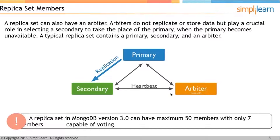A replica set can also have an arbiter. Arbiters do not replicate or store data but play a crucial role in selecting a secondary to take the place of the primary when it becomes unavailable. A typical replica set contains a primary, a secondary, and an arbiter, with a heartbeat going constantly between all nodes — similar to the heartbeat seen between data nodes and the name node in Hadoop.